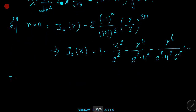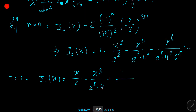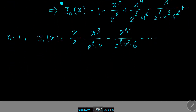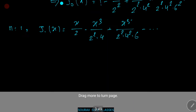We now draw the graph of these two functions. Both functions are oscillatory with a varying period and decreasing amplitude. If n = 1, then J₁(x) = x/2 − x³/(2²·4) + x⁵/(2²·4²·6) − ... Both functions are oscillatory with a varying period and decreasing amplitude.